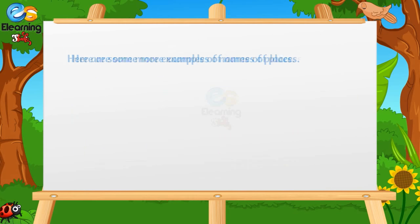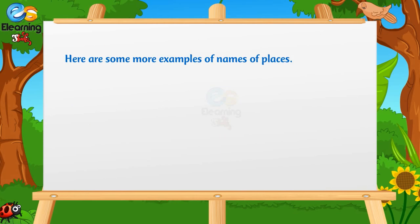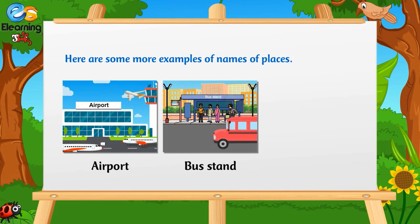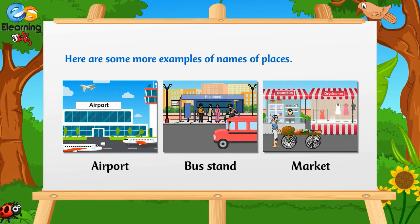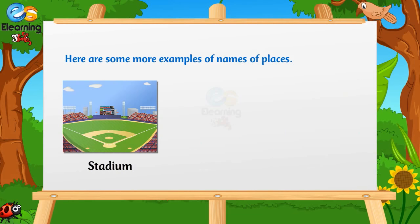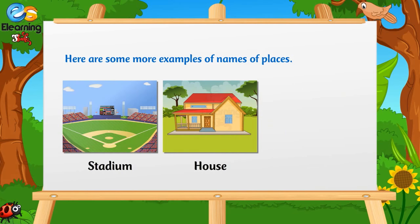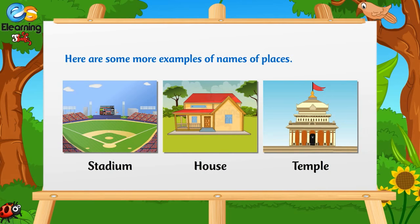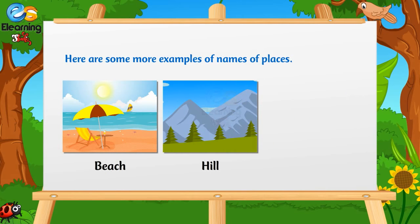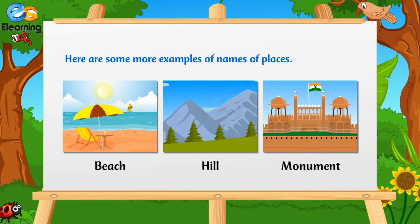Bank. Here are some more examples of names of places. Airport, Bus Stand, Market, Stadium, House, Temple, Beach, Hill, Monument.